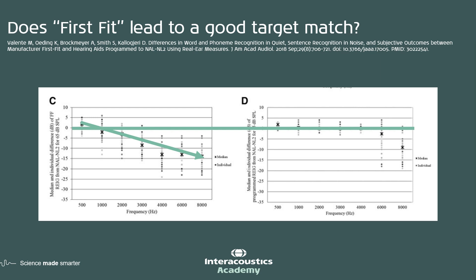Contrast that with graph D, where the median dispersion was much lower. A programmed or real ear measurement fitting gives a much closer match to target, especially in the low and mid frequencies, and the individual dispersion was also much lower. This shows that real ear measurements lead to a closer match to target than first fittings.